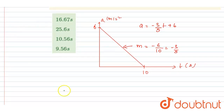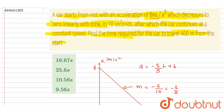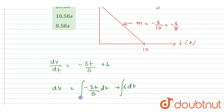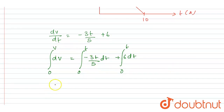Now the velocity function: we can write dv/dt equals 6 minus (3/5)t. Initially the car starts from rest, so at t equals zero, velocity was zero. Integrating this, the velocity function v equals 6t minus t squared by 10.